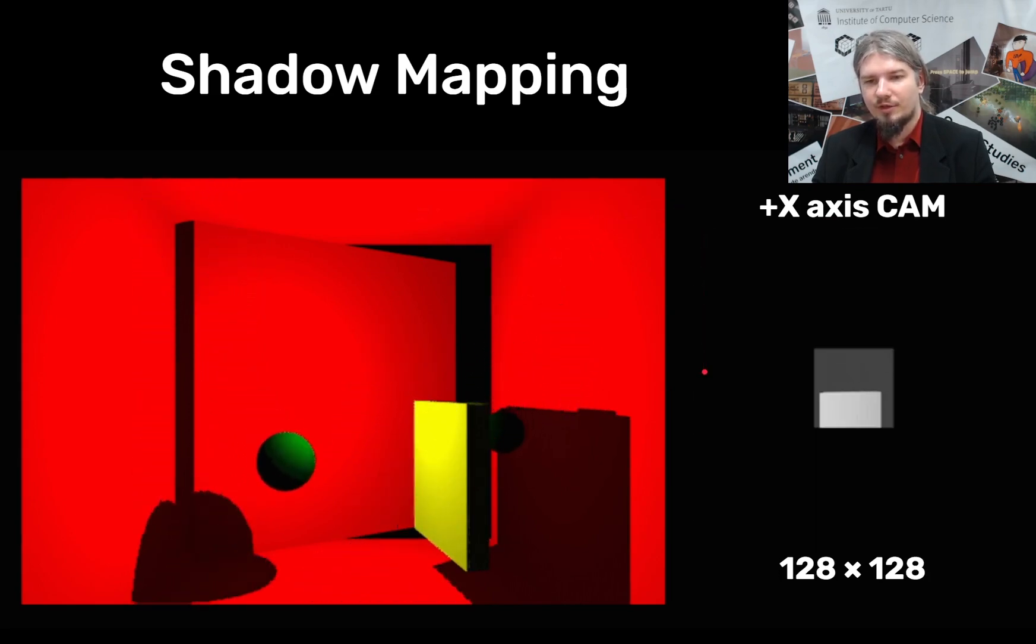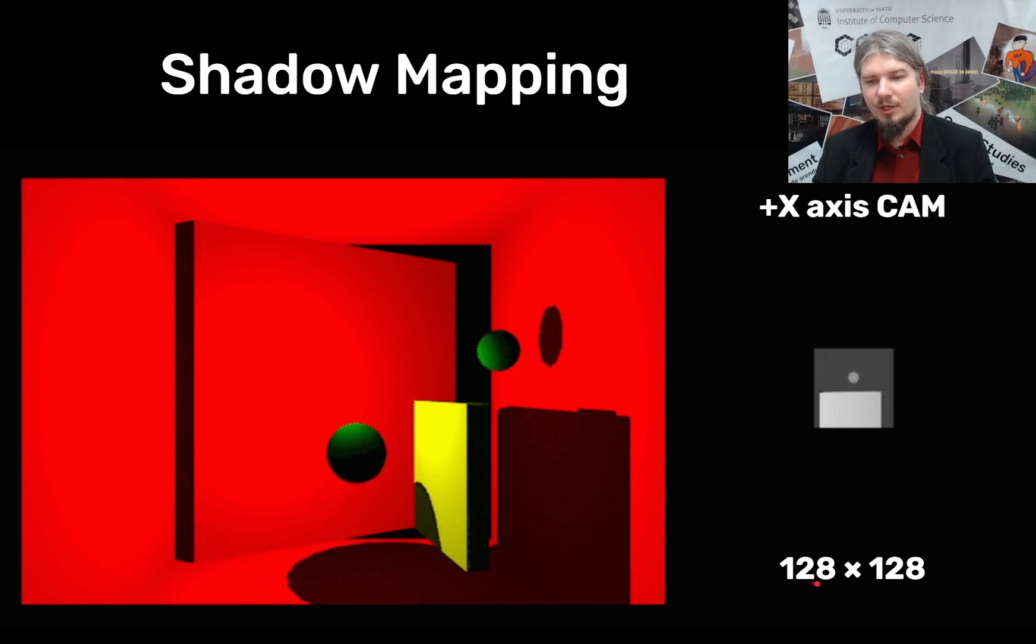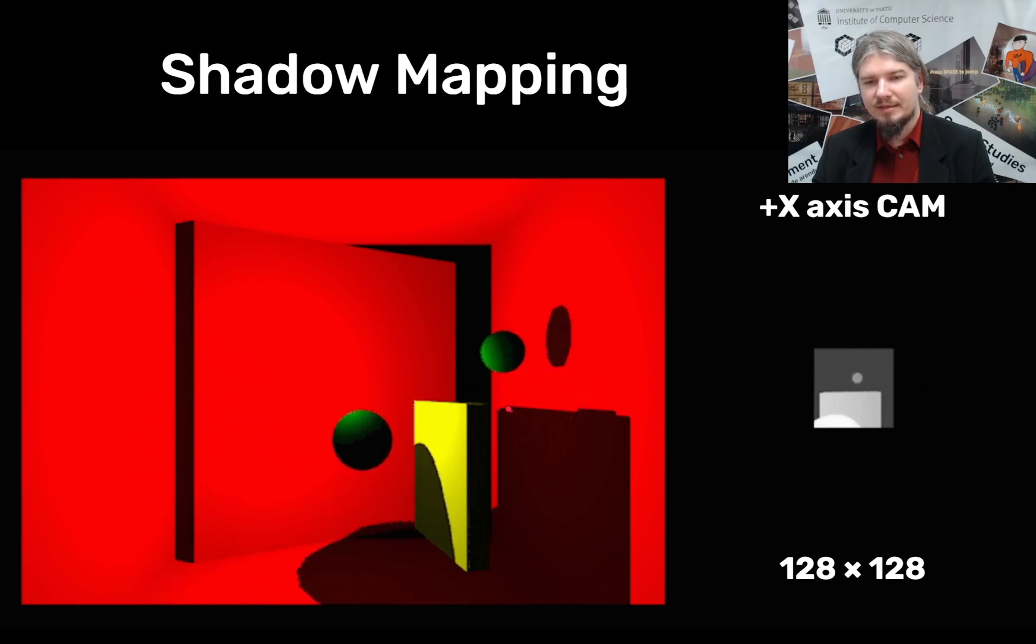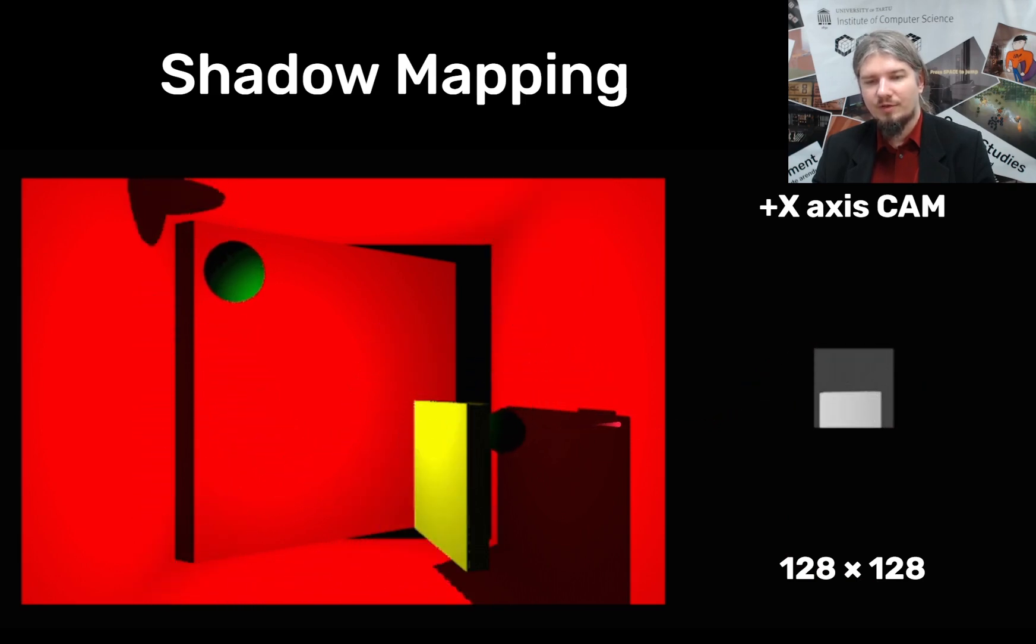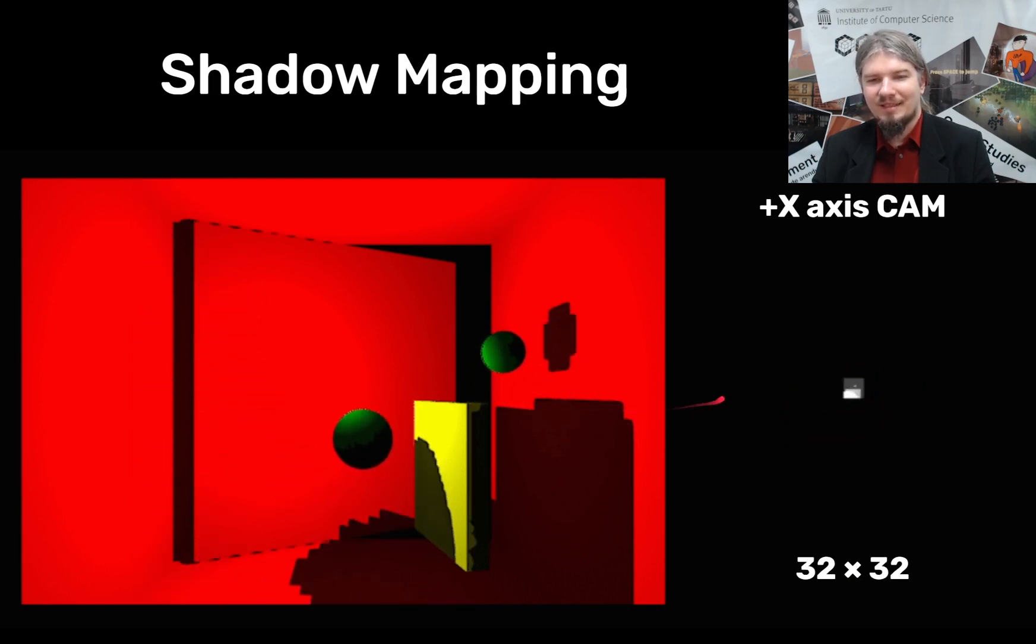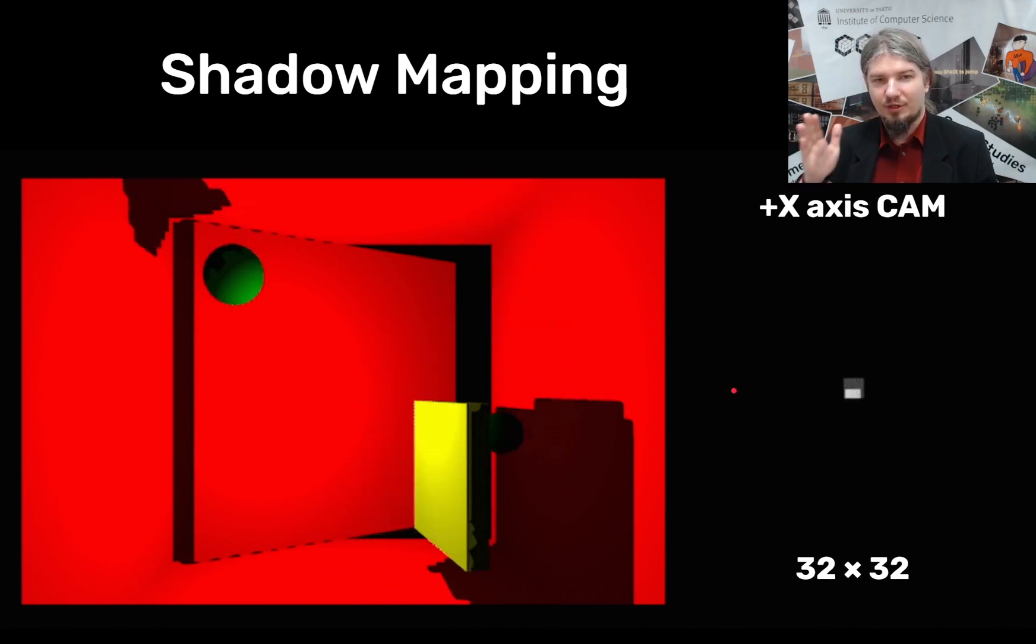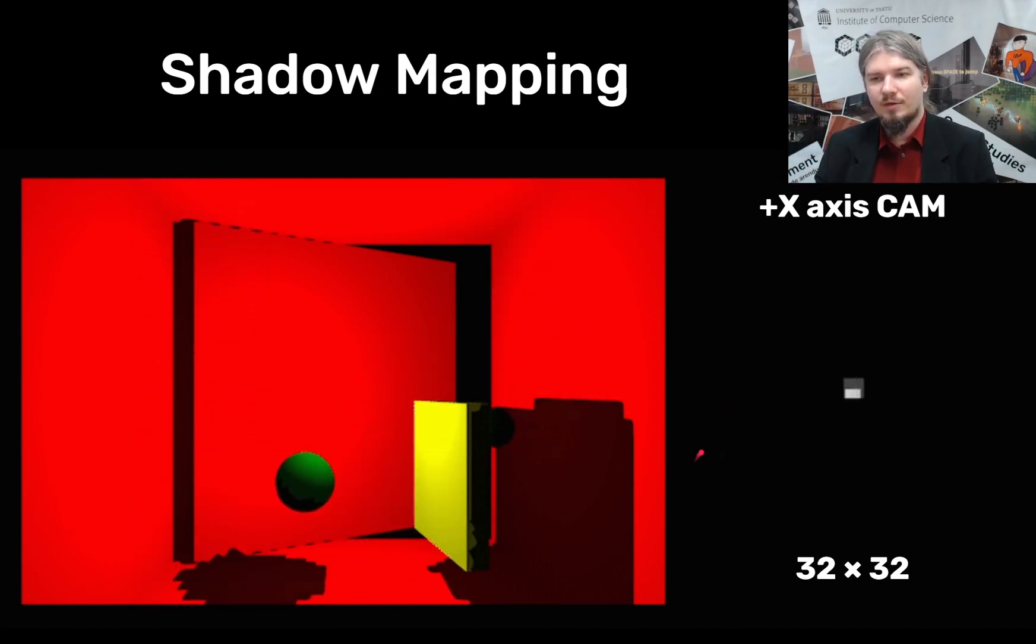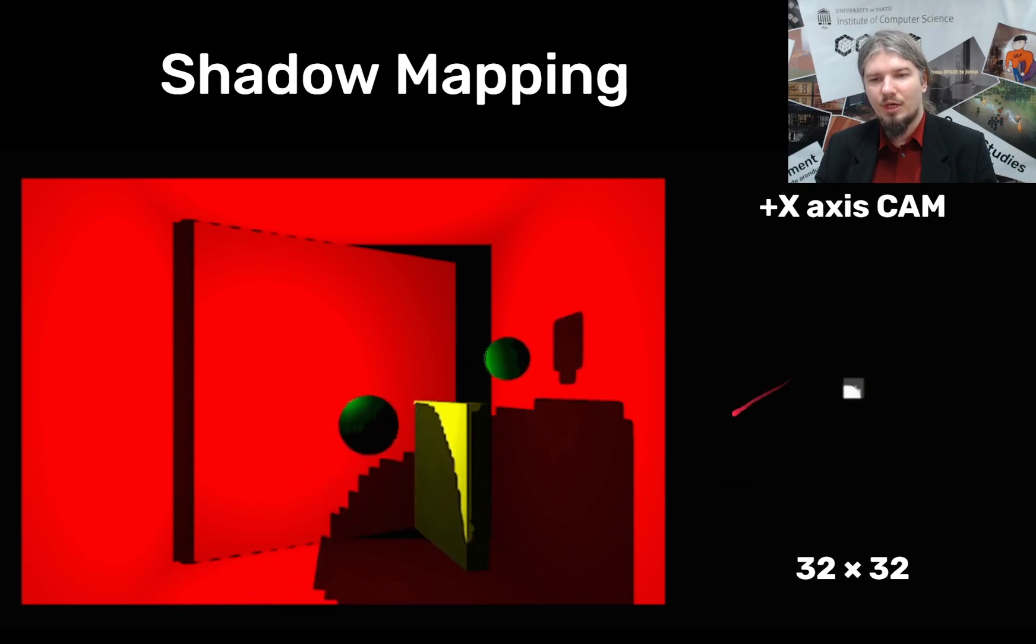Now we can lower the resolution of that shadow map to let's say 128 times 128 so this is quite a small shadow map and we now start seeing these pixel aliases all around the edges of the shadows. Or we could make it even smaller and now we have these very big pixels. So when in video games you see that the shadows have these jagged edges that is the result of your shadow map being with a too low resolution.